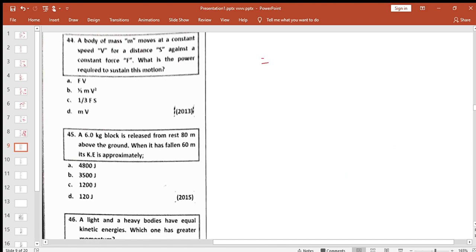A body moves against a constant force. What is the power? Power is work per unit time. Work is F dot d, so power is F dot d divided by t, which equals F dot v. Simple formula.